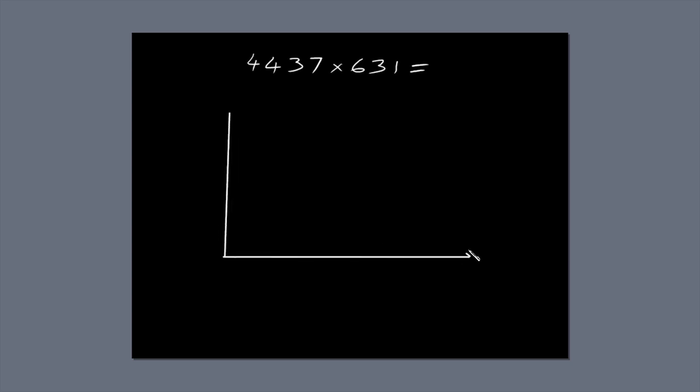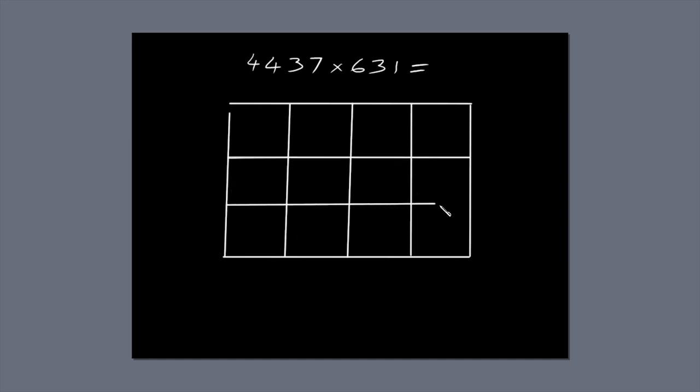The first thing you need to do is draw a box. Subdivide the box into four columns because the first number, 4437, has four digits. You also have to subdivide the box into three rows because 631 has three digits. You end up with a box subdivided into 12 smaller boxes.